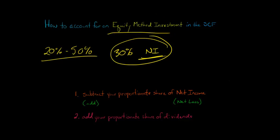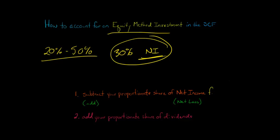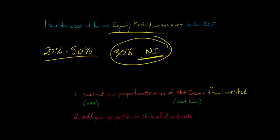So we're going to have to do two things when we're putting together a statement of cash flows. First, we're going to have to subtract the proportionate share of net income from that investee — the company that you've invested in. You recognize a proportionate share of their net income, but you didn't actually get cash for it. 30 percent of their net income gets added to our net income, but it doesn't mean you got any cash from that investee. So we're going to back that out when we're doing the operating section of the statement of cash flows.